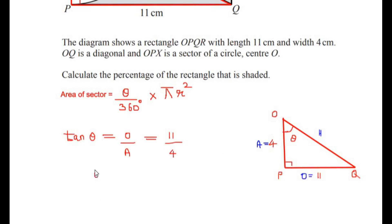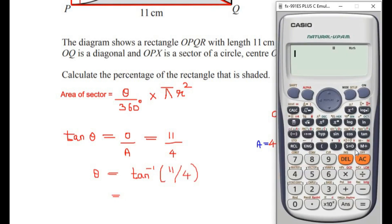To find θ, we take the inverse tan of 11/4. Calculating tan⁻¹(11/4) gives us 70.01°, which we round off to 70 degrees. So the value of θ is 70 degrees.